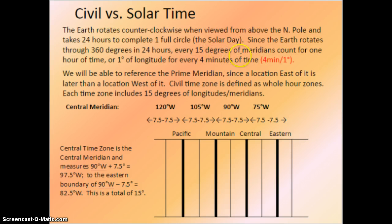So these are a couple of numbers we'll need to know: 15 degrees per hour, or four minutes per one degree. And these are interchangeable as well.